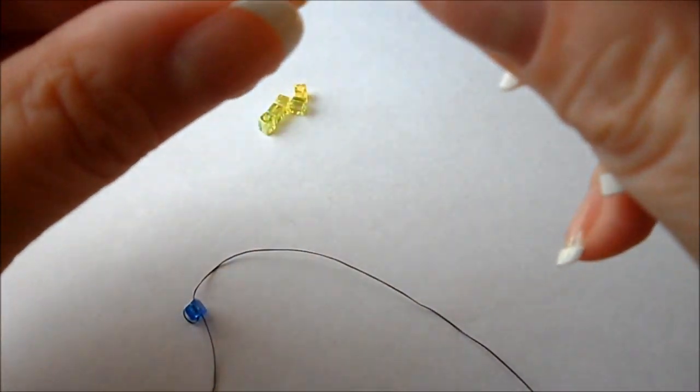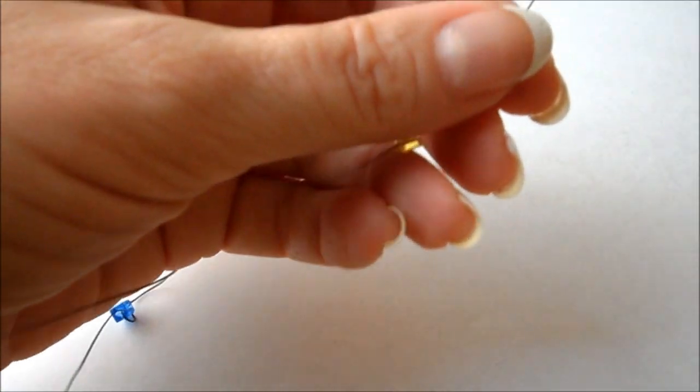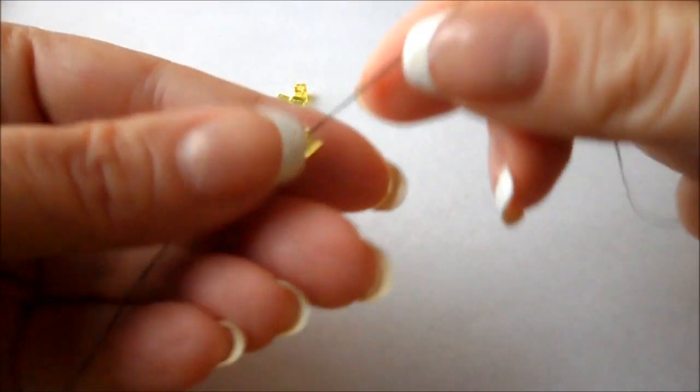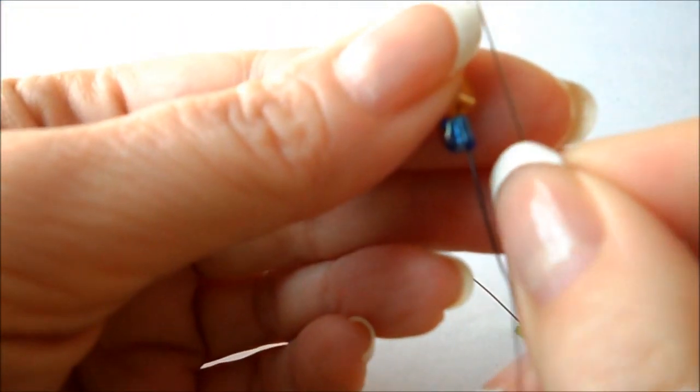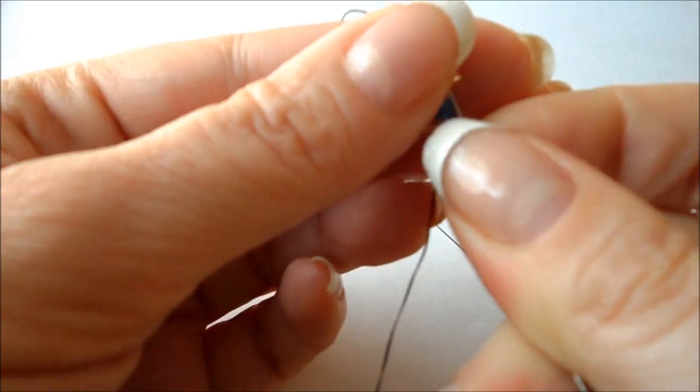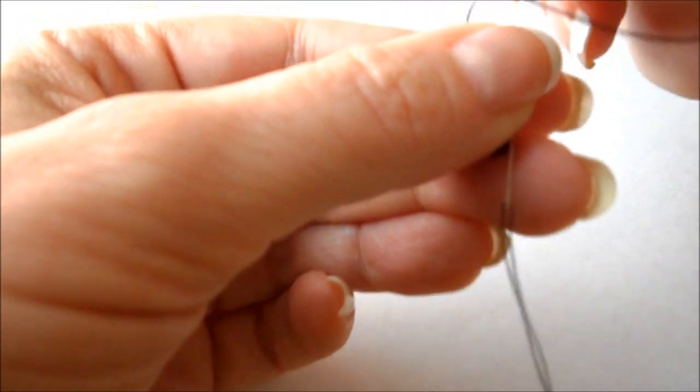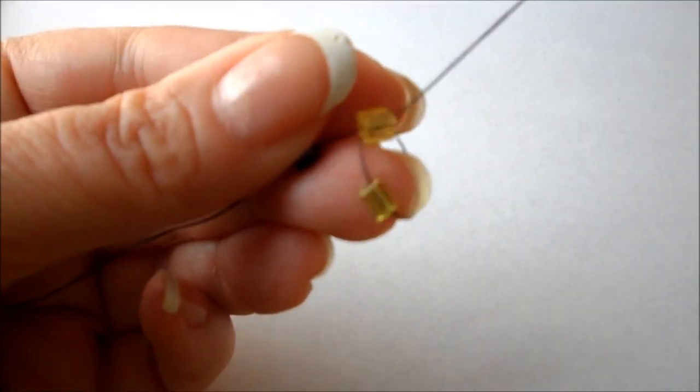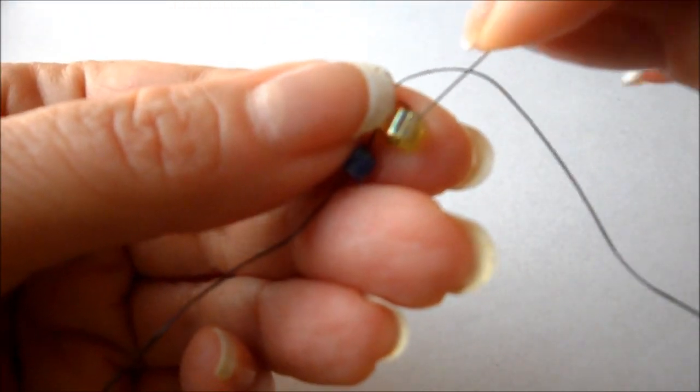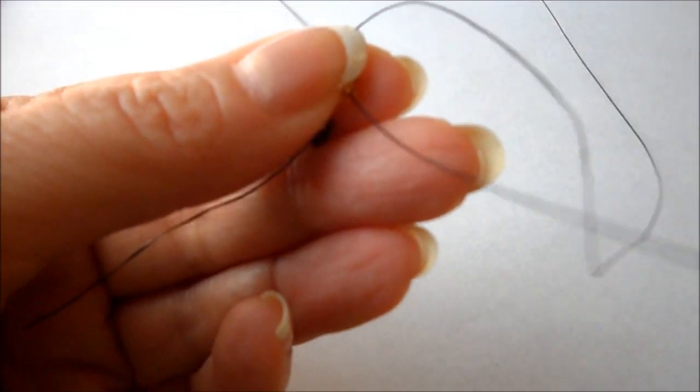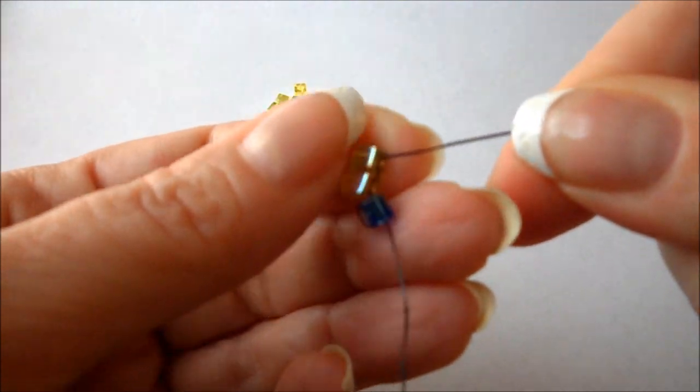To start the ladder, put two beads on and bring them down towards the stopper bead. Now go back up through that first bead. Pull. This will stack the two together. Then go back through the top bead, and that secures it.